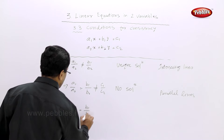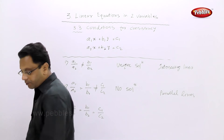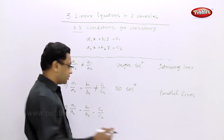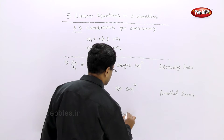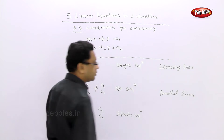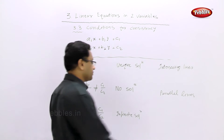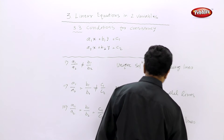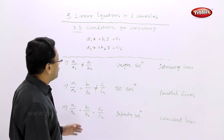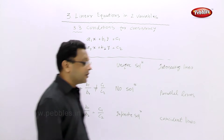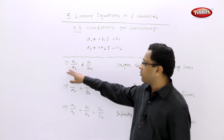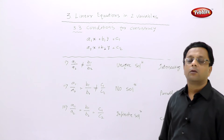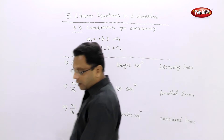The third condition is: if all three ratios are the same, that is a1 upon a2 equals b1 upon b2 equals c1 upon c2. In this case there are infinite solutions and the lines are coincident lines. To check consistency, just find a1/a2 and compare with b1/b2 and c1/c2 based on these three conditions, and you will know if the equations are consistent or not.